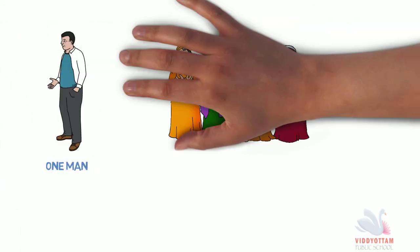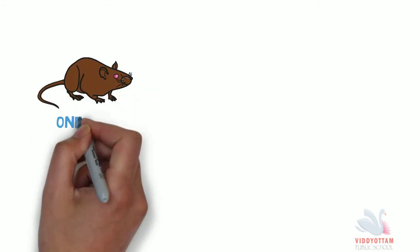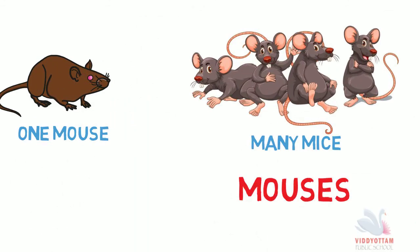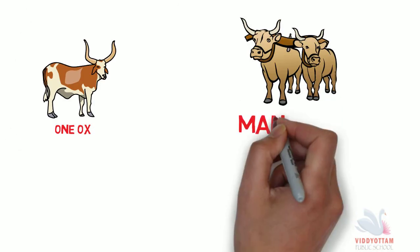One man, many men. We don't say mans, we say men. One mouse, many mice. We don't write mouses, we write mice. One child, many children. One ox, many oxen.